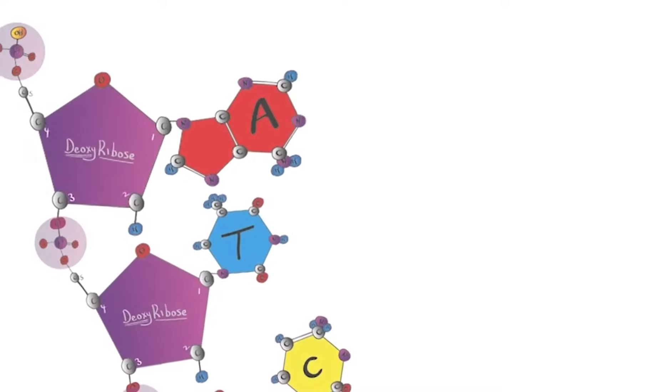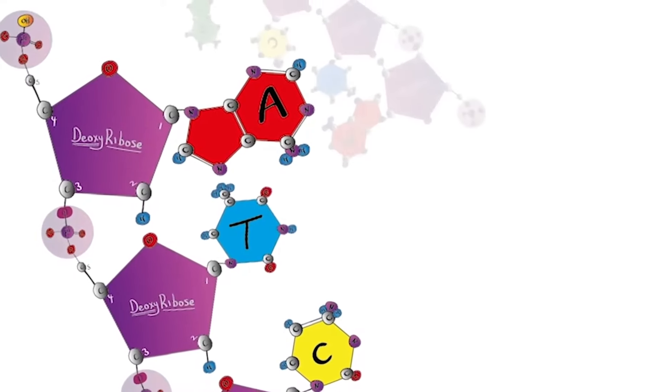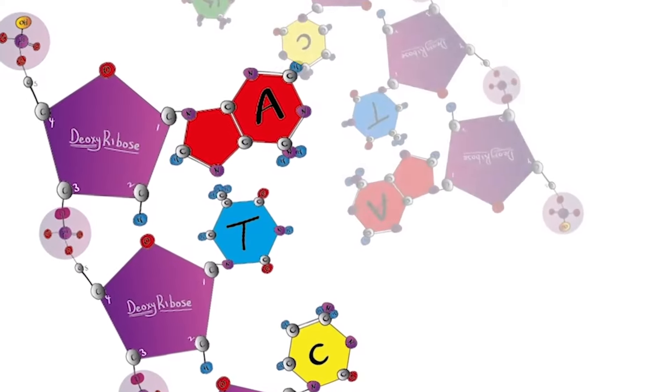Complementary base pairing requires the DNA polynucleotide chains to run in anti-parallel directions.